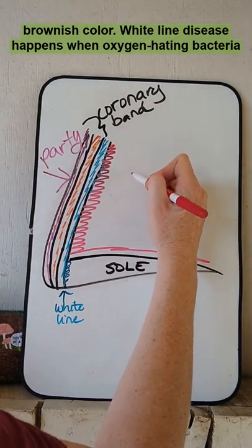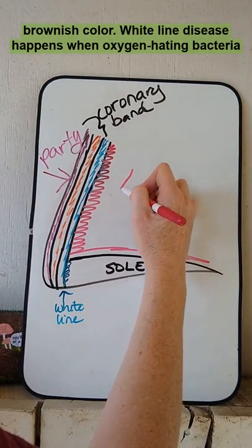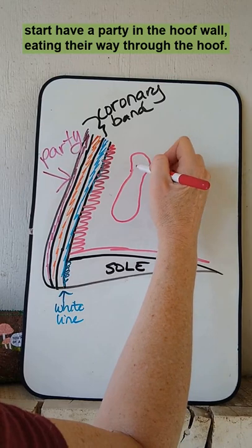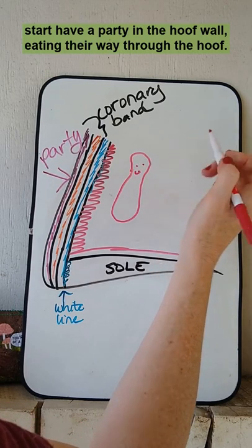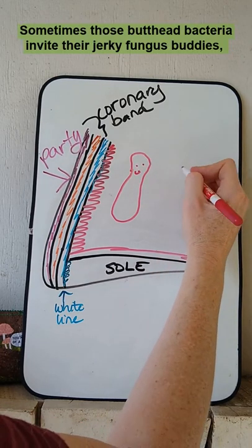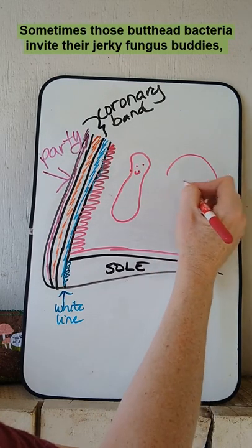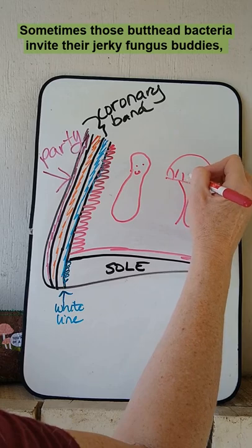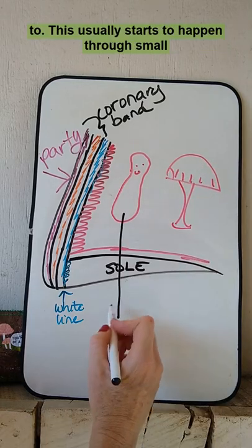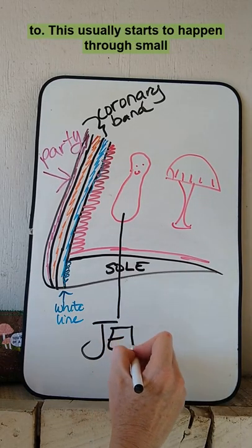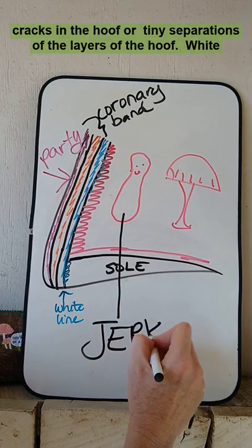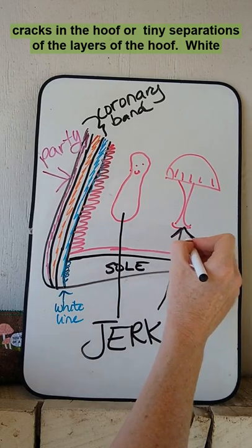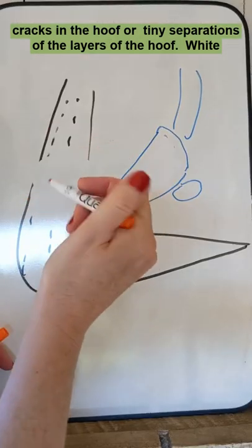White line disease happens when oxygen-hating bacteria start to have a party in the hoof wall, eating their way through the hoof. Sometimes those butthead bacteria invite their jerky fungus buddies, too. This usually starts to happen through small cracks in the hoof or tiny separations of the layers of the hoof.